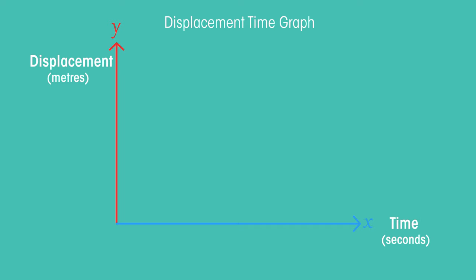Notice how time goes on the horizontal x-axis at the bottom, and the displacement goes on the vertical y-axis. Time nearly always goes on the x-axis, and then what you're measuring, so the displacement in this case, goes on the y-axis.